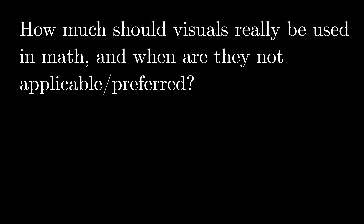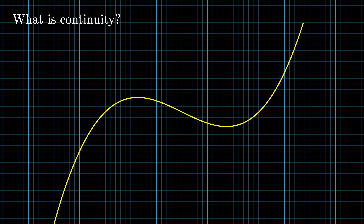How much should visuals really be used in math, and when are they not applicable or preferred? People love visual intuition so much that sometimes they think in order to understand something they have to be able to visualize it. I'm definitely in the camp where if I can visualize it that's the most satisfying way — sometimes. But there are a couple of problems with this. One is that you can halt your learning: sometimes something is hard to visualize, and rather than just moving past it with the logical, symbolic understanding of why it works and then seeing what you can get from there, you're just stuck at that wall. Also, not all visual explanations actually match the logic.